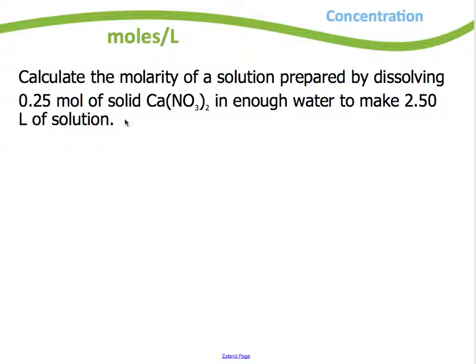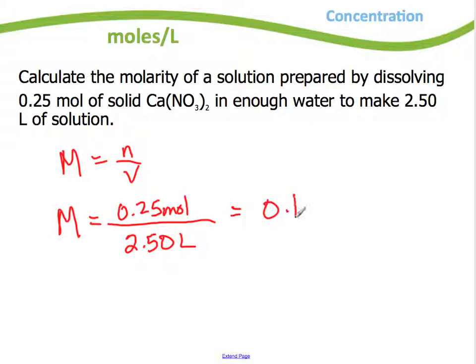Calculate the molarity of a solution. So I want to know molarity. Here's my formula. Prepared by dissolving 0.25 moles of solid calcium nitrate. So molarity is equal to moles are 0.25. Nice that they gave me moles right to begin with. Divided by, and enough water to make 2.50 liters of solution. So now I can go to my calculator, divide those two. So 0.25 divided by 2.50 equals 0.1.